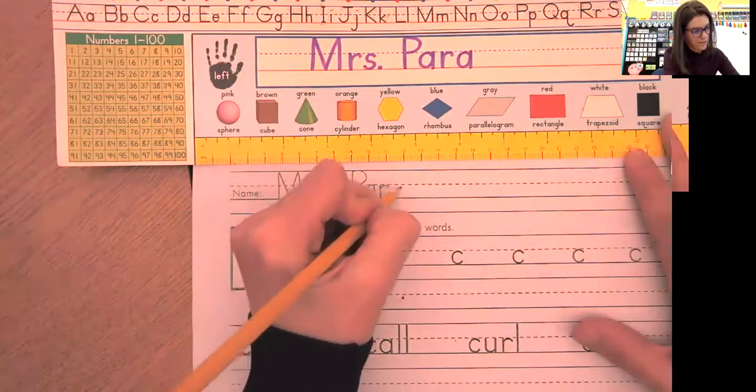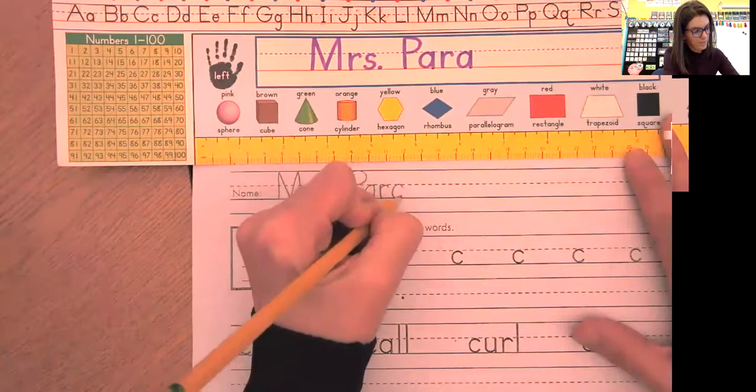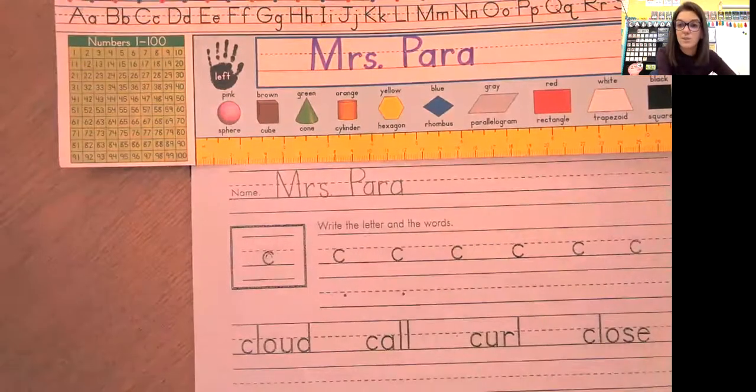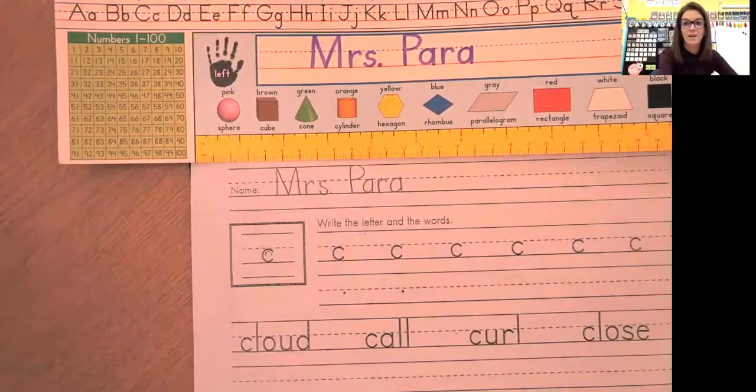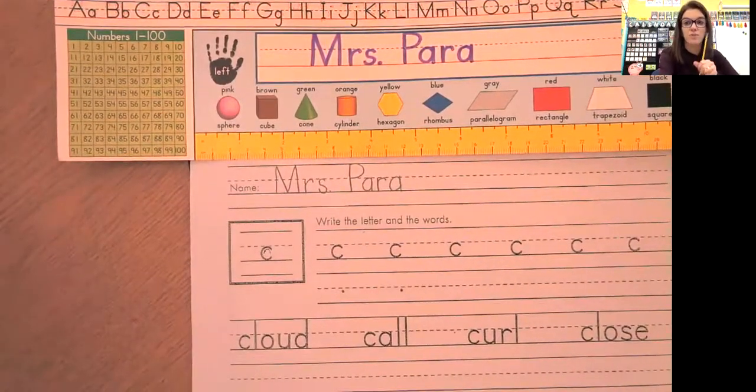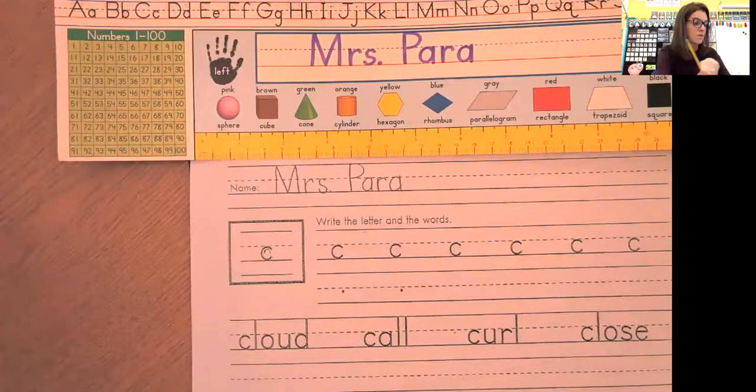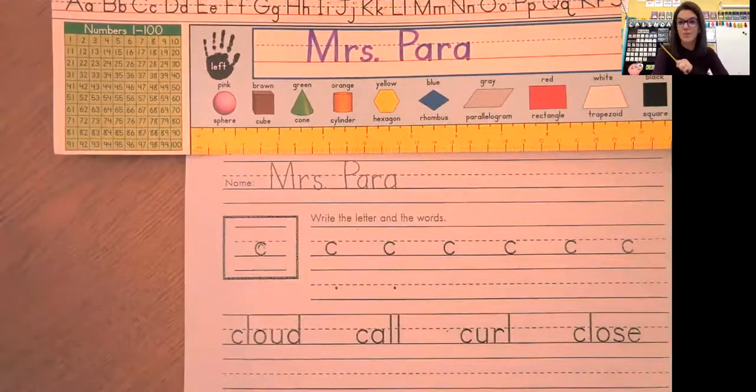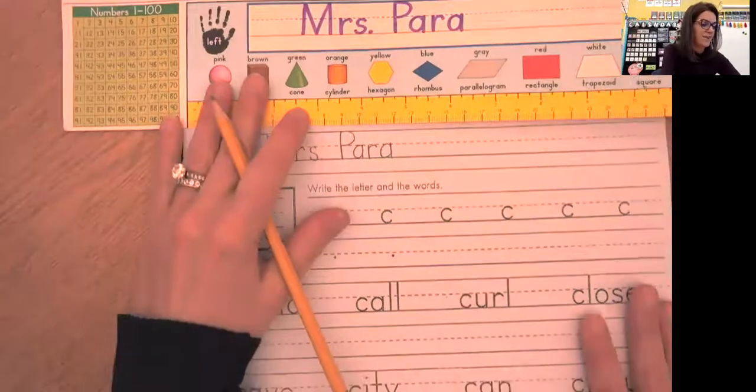When you write your name, your name should be written nice and slow too. I also want you to make sure you write your first name and your last name. And again, this line is so long, you can do it again. Extra practice. We love that.